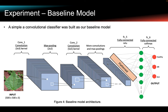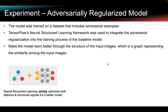We build a simple convolutional classifier as our baseline model. The baseline model contains three convolutional layers and three max pooling layers, following which are two fully connected layers to produce the final output. To build the regularized model, we start by building another similar model, but this time adversarial training will be incorporated into the training process.